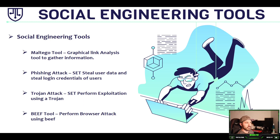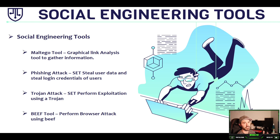Different kinds of social engineering tools: Maltego is an awesome tool to gather information. You can use it to get all the info for a specific target or specific user, and it features a graph user interface. We're going to see that in upcoming videos.